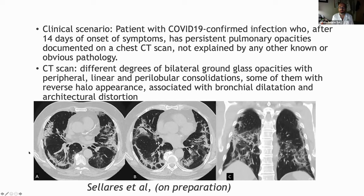Here is an example of what we're seeing — normally what we're seeing is an organizing pattern or organizing changes. We don't have pathological histology from the CT scans, but we have biopsies done post-mortem. In many cases we see organizing areas also in the pathology from patients who had died.